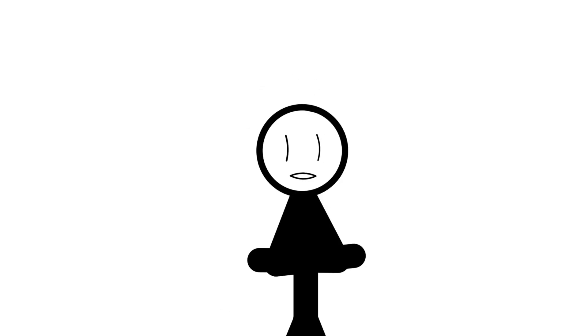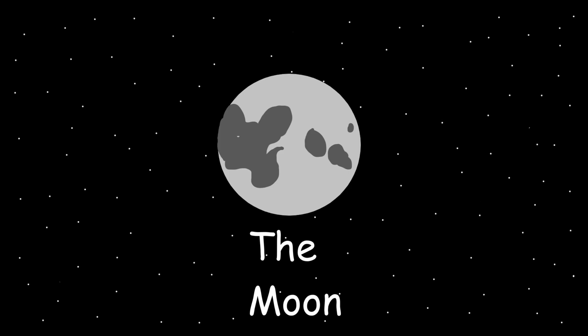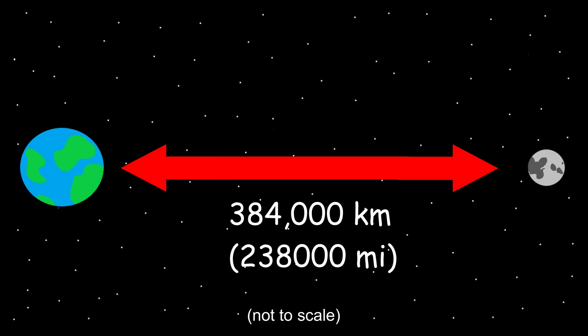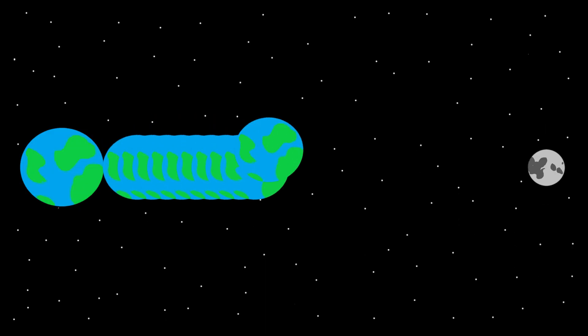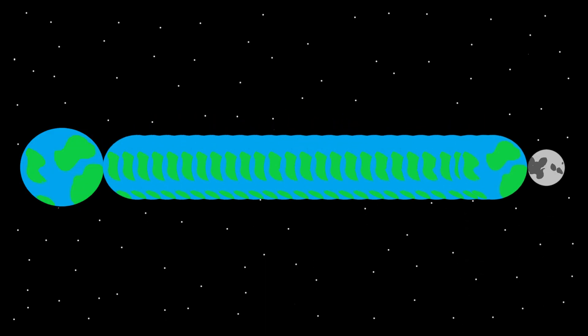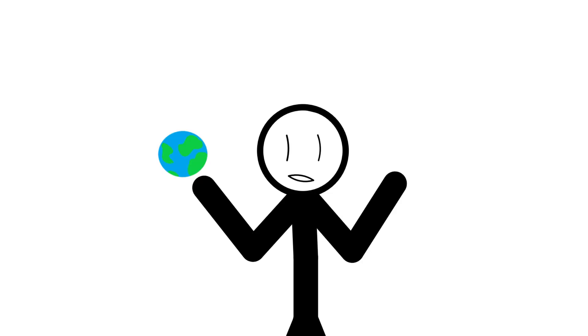Space is big, really big. Consider first the moon. It's 384,000 kilometers away and yet we still see it clearly in the night sky. You can fit 30 Earths in that space. Let that sink in for a minute. 30 Earths can fit between us and the moon.